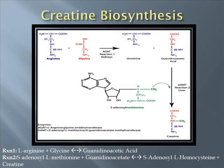The first reaction, the combination of L-Arginine and Glycine to form the intermediates ornithine and guanidinoacetic acid, is catalyzed by L-Arginine Glycine Amidinotransferase, or AGAT. This is the rate-limiting enzyme step that occurs in the kidneys. The second reaction, catalyzed by guanidinoacetate methyltransferase, or GAMT, occurs in the liver and involves an additional reaction with S-adenosylmethionine to produce the final product, creatine.